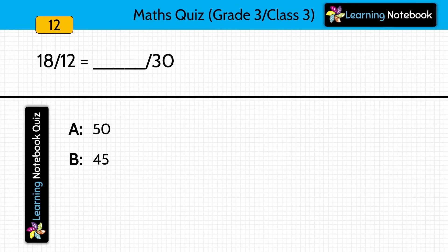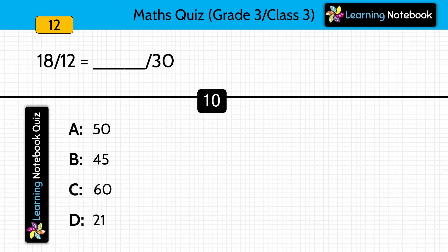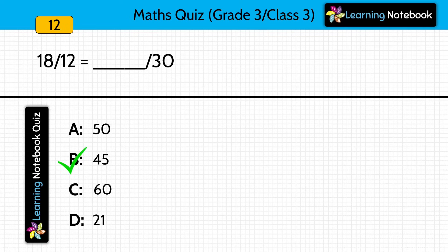Question twelve: 18 by 12 equals blank by 30. Options are 50, 45, 60, or 21. Answer is 45 — these are equivalent fractions.